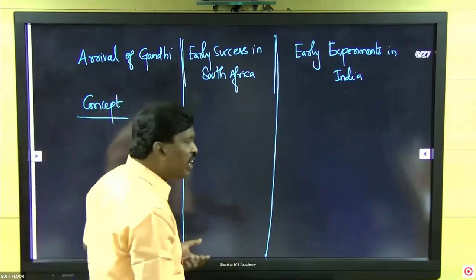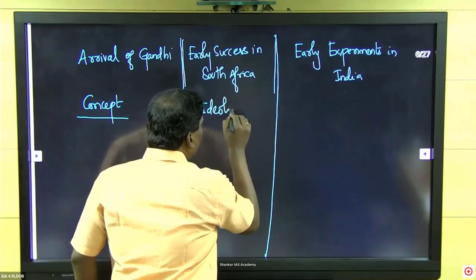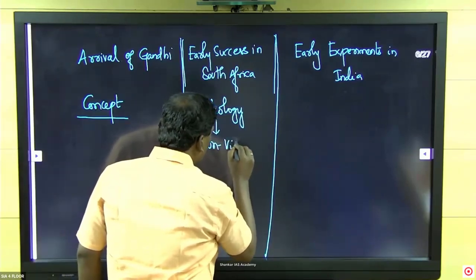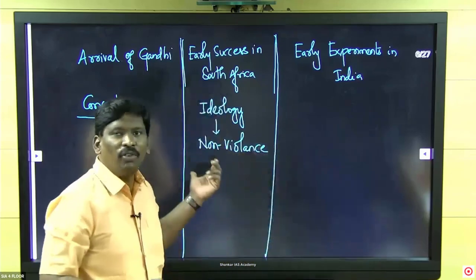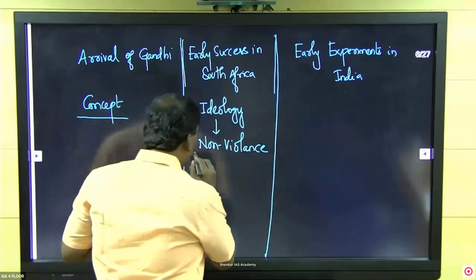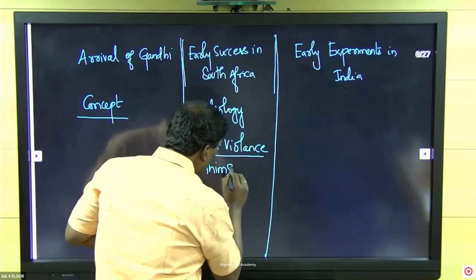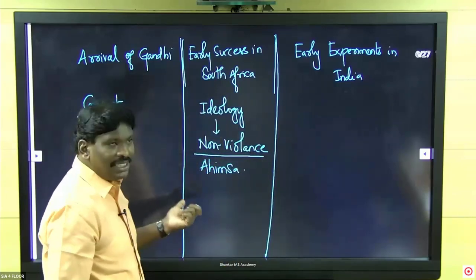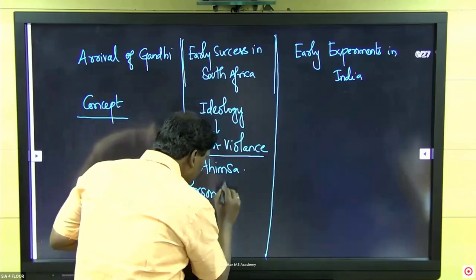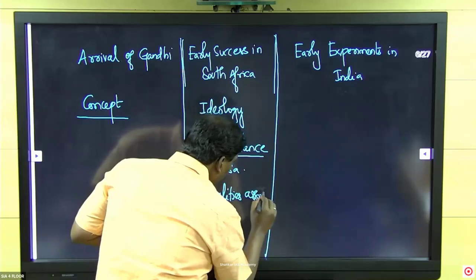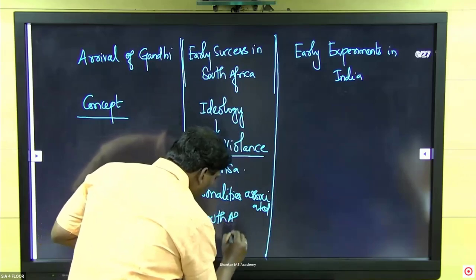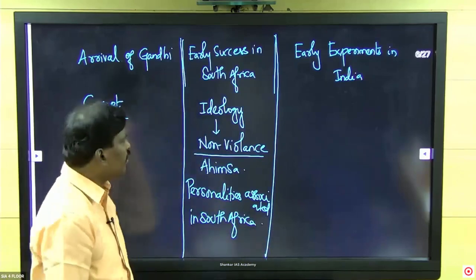For Gandhi's early success in South Africa, focus on the personalities associated with Gandhi there. For his early experiments in India: Champaran, Kheda, Ahmedabad mill strike. Arrival of Gandhi and South Africa success are rarely asked — only occasionally as guest questions.